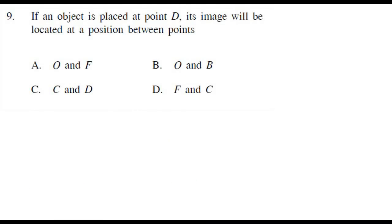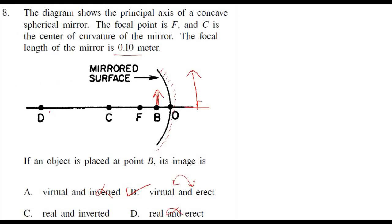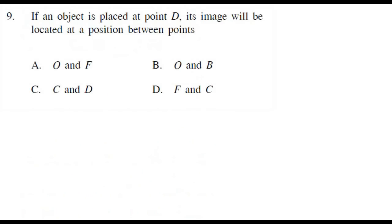Object is placed at point D. D is here, which means the object is beyond C. When the object is beyond C, the image would be formed between F and C, smaller in size, real and inverted. The correct answer is between F and C.